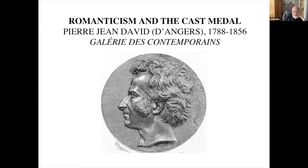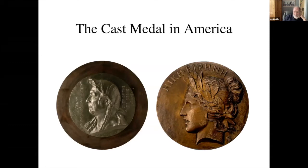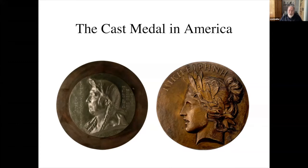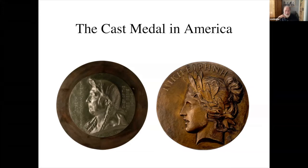Throughout Europe and the US, many people were influenced by this. France was taking over from Italy as the place to go to learn the new arts in the third quarter of the 19th century. These are two of the best Americans of that period who went: Olin Levi Warner with his portrait plaque of Chief Joseph, and a victory head by Augustus Saint-Gaudens. Again, these are large uniface cast medals or plaques. Chief Joseph is actually about 18 inches across, so probably a little bigger than your average medal.